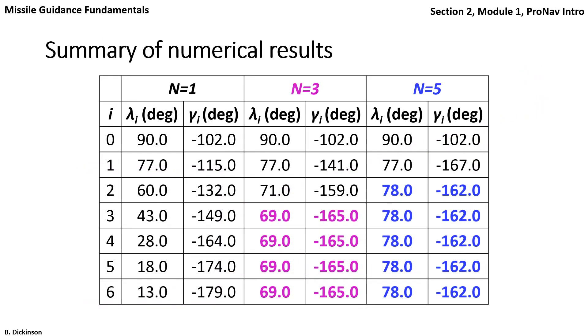Here's a summary of the numerical results for our three examples. For n equals one, it was a pursuit guidance course. And that's reflected in the continuously changing line of sight angle. There was no collision triangle. It was a tail chase. Only if the pursuer could go faster than the target was there a collision. When n equaled three, there was a collision triangle because the response of the pursuer was to lead the target more. And for n equals five, again, the same result. But comparing three to five, we see that we achieve the collision triangle faster for greater navigation gain. Although, note the difference between the zero and first iteration for each of these n cases.